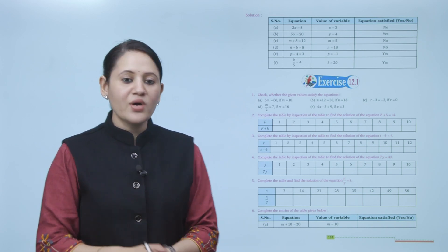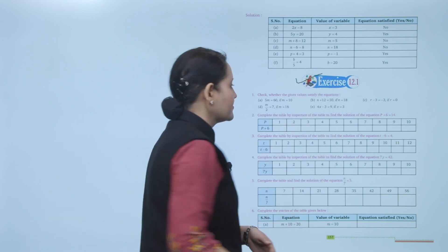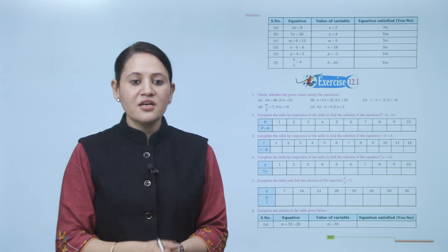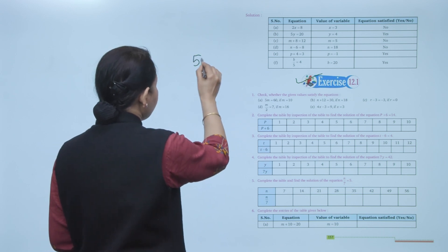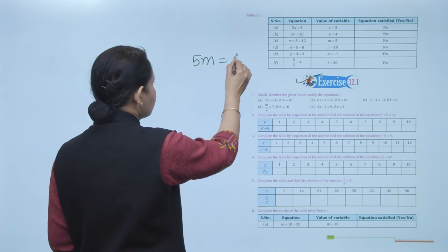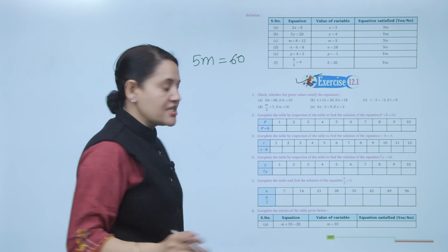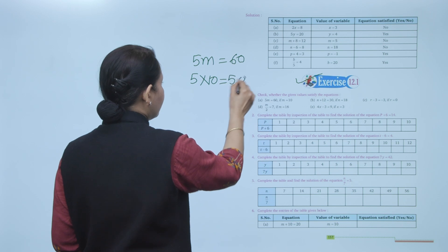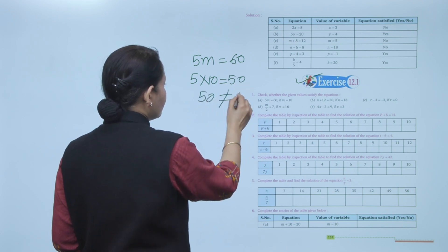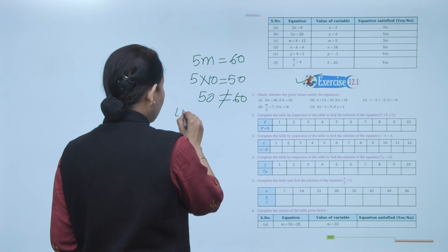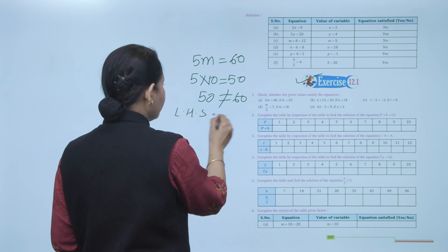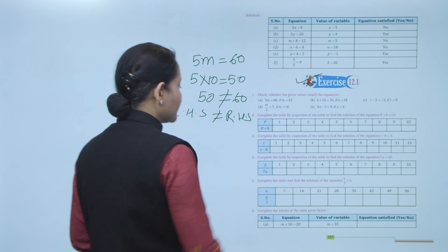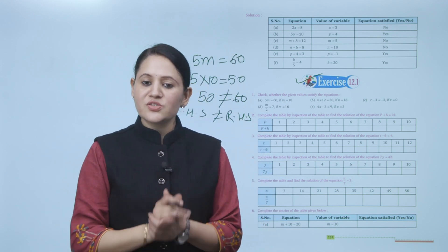Exercise 12.1: check whether the given value satisfies the equation. The equation is 5m equals 60 and the given value of m is 10. Substituting: 5 into 10 equals 50, which is not equal to 60. Since LHS is not equal to RHS, the given value does not satisfy the equation. Practice all the questions of this exercise.